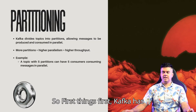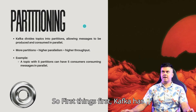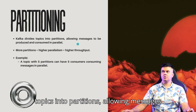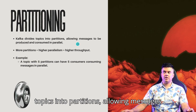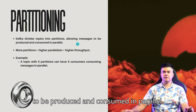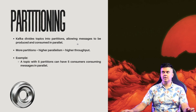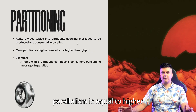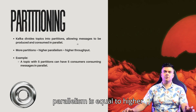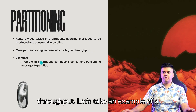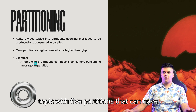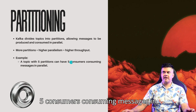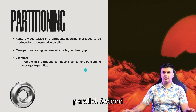First things first: Kafka has partitioning ability, where Kafka divides topics into partitions allowing messages to be produced and consumed in parallel. More partitions equals higher parallelism, which equals higher throughput. For example, a topic with five partitions can have five consumers consuming messages in parallel.